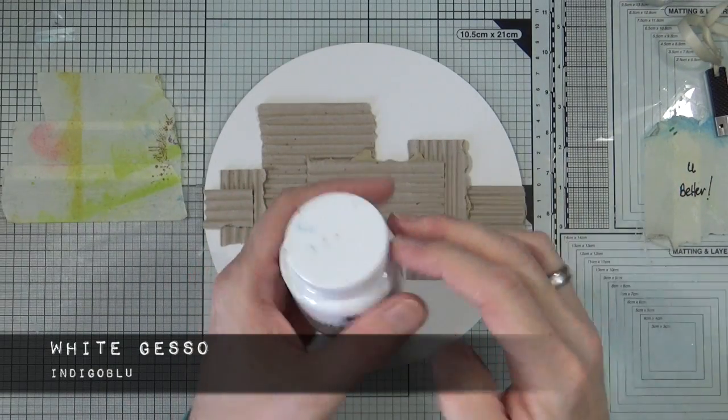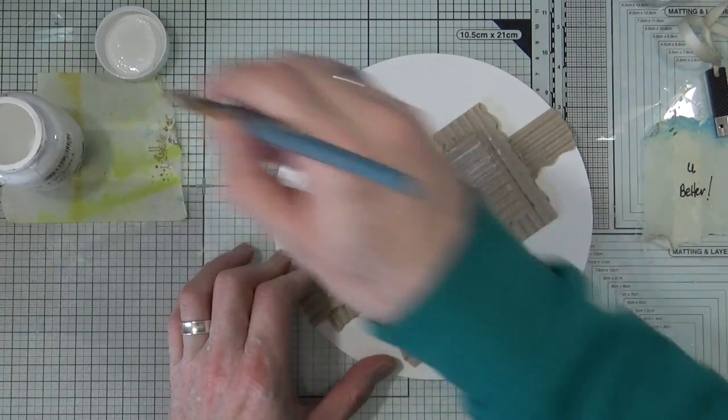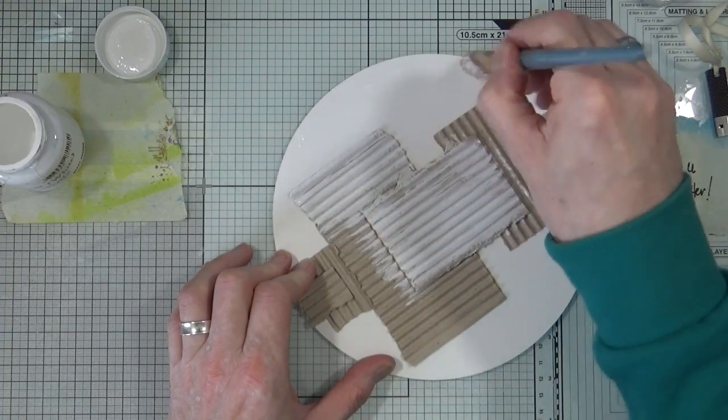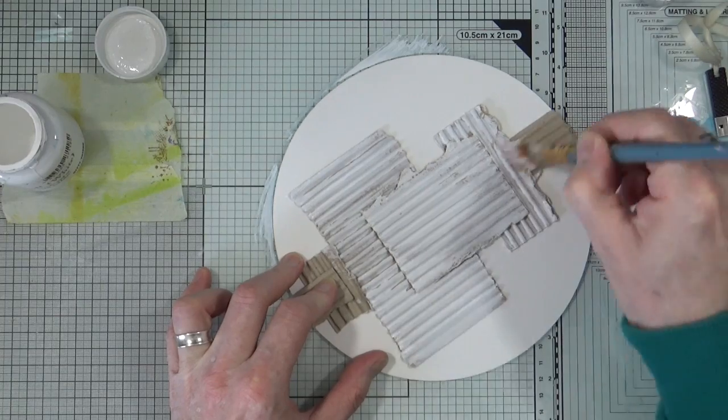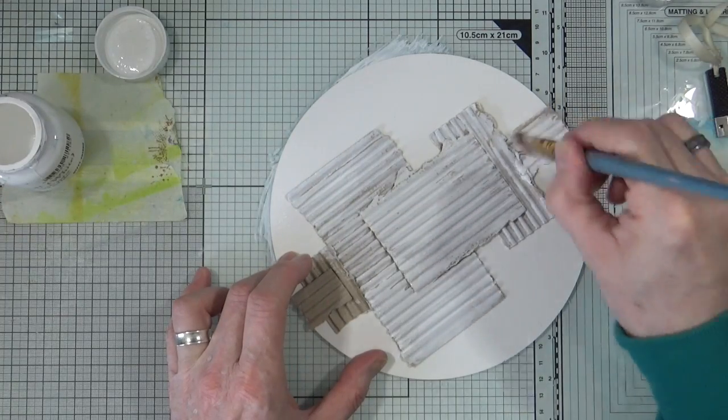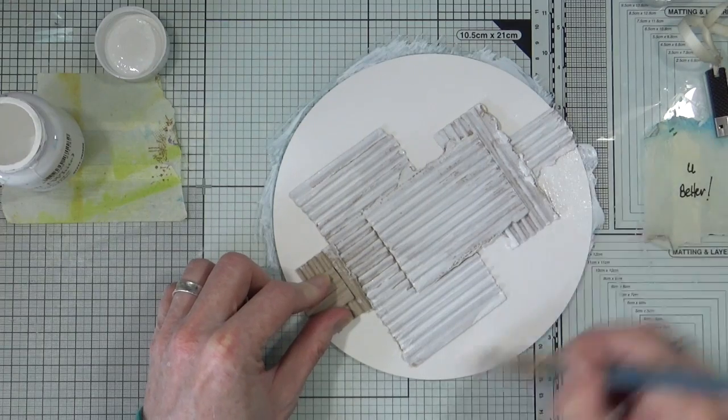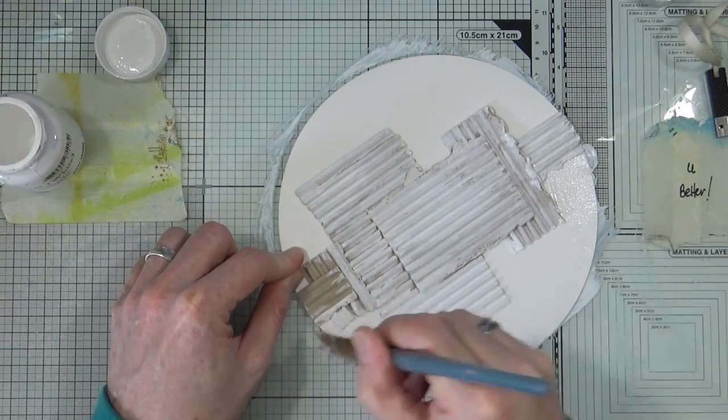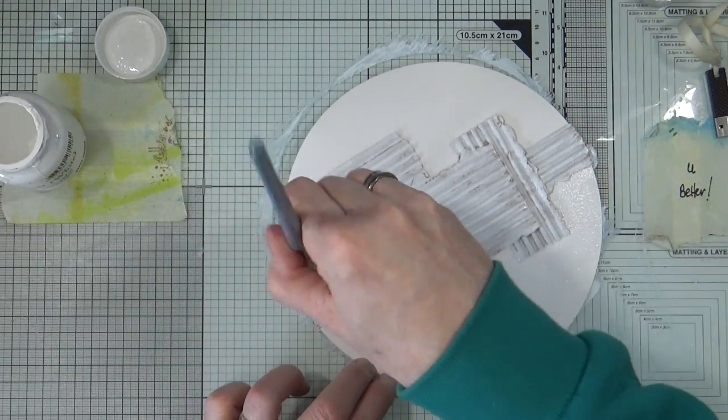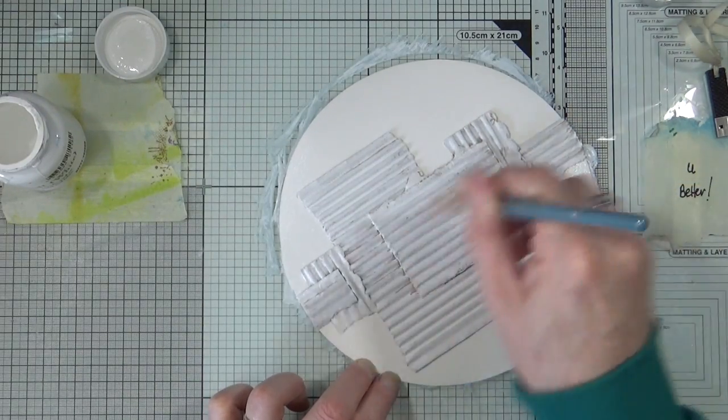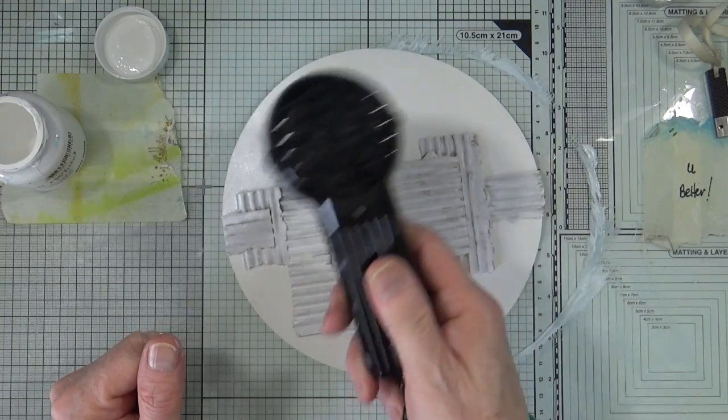Now everything's dry, I'm bringing out my white gesso from Indigo Blu and I'm going to give the entire page including the corrugated cardboard a thin coating of that white gesso. Now that I'm happy there's enough gesso on there, I'll grab my heat gun and give it a gentle warming to make sure it's all nice and dry before moving on to the next step.